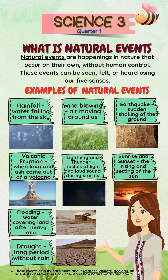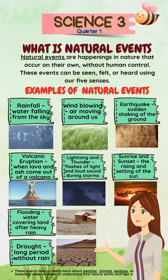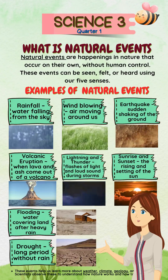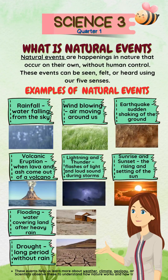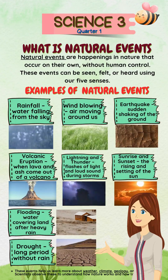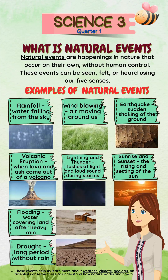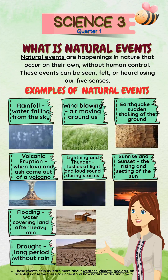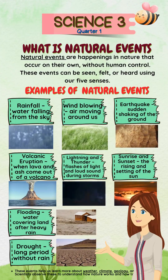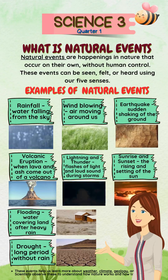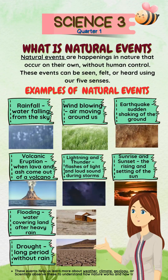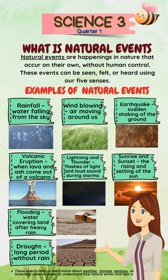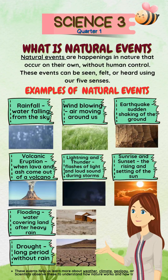Examples of natural events: Rainfall — water falling from the sky. Wind blowing — air moving around us. Earthquake — sudden shaking of the ground. Volcanic eruption — when lava and ash come out of a volcano. Lightning and thunder — flashes of light and loud sound during storms.